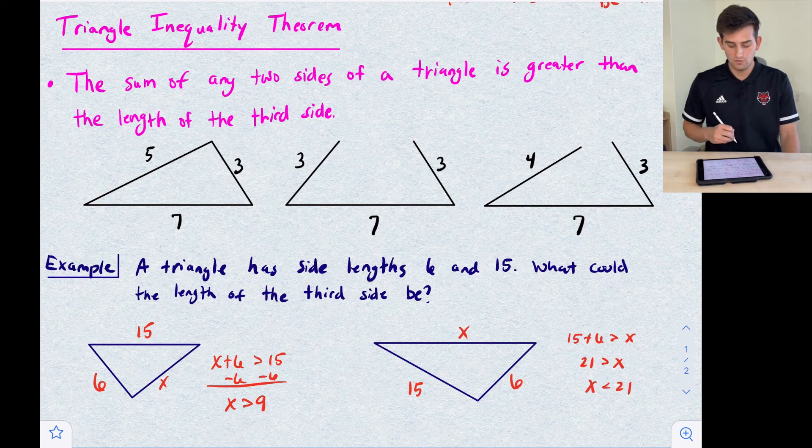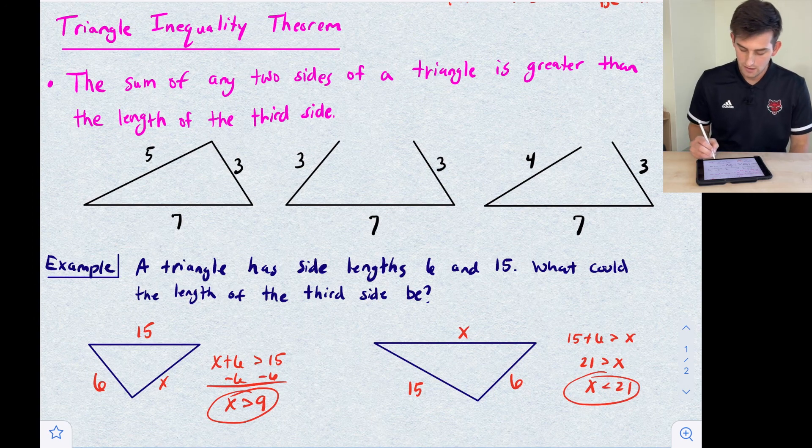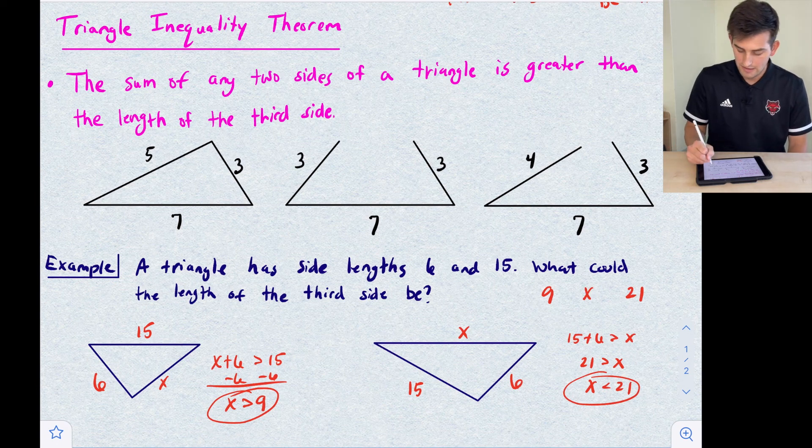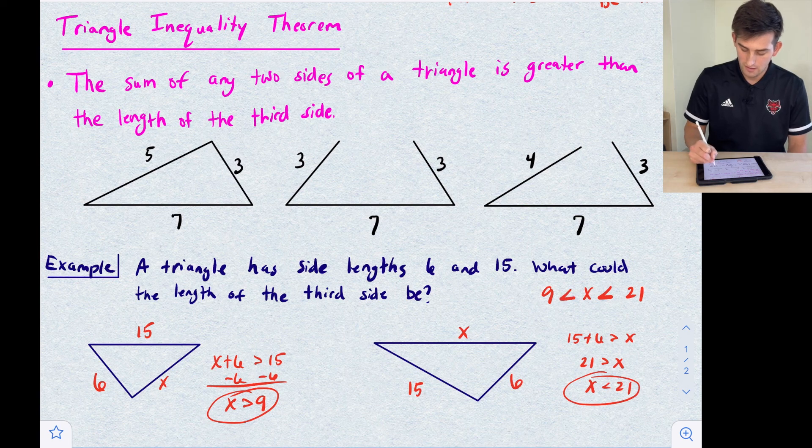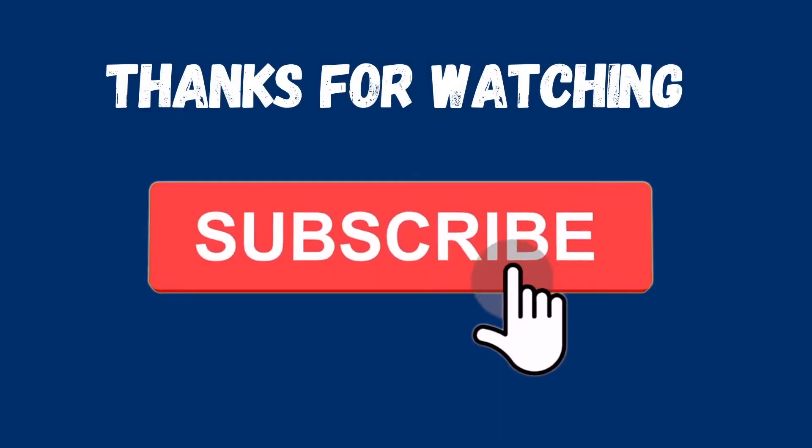Now we have two answers here and notice they're both inequalities. We could write that together as one compound inequality. We could write our smaller number on the left, large number on the right, put our variable in the middle, and fill in our inequality symbols. So x needs to be less than 21 and x is greater than 9. So our possible side length needs to be greater than 9 and less than 21.